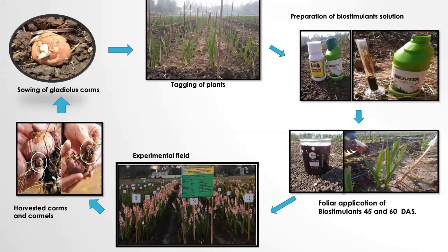These are the corms — gladiolus propagating material. The bed size prepared was 1.2 by 1 meter. Corms were sown at a spacing of 30 by 20 centimeters. Before foliar application of biostimulants, the plants were tagged. The biostimulant solution was prepared at 3 ml in 1000 ml of water or 5 ml in 1000 ml of water.